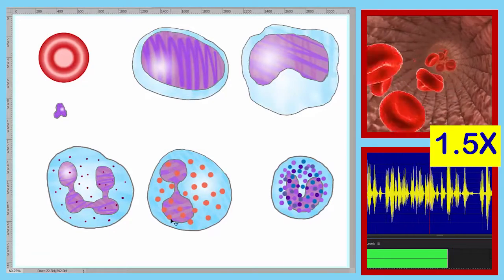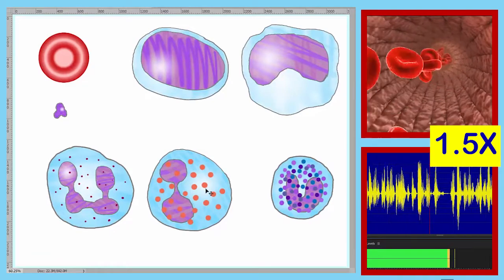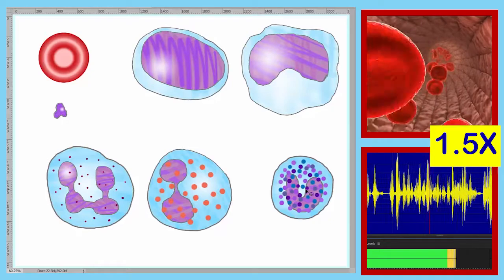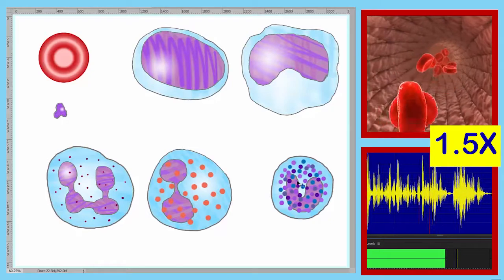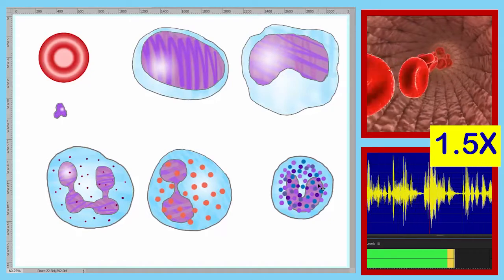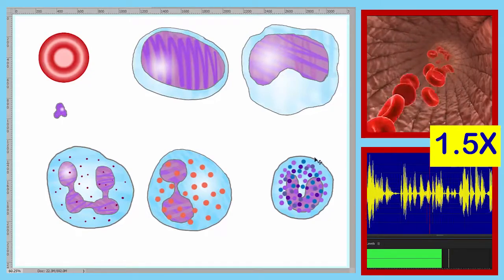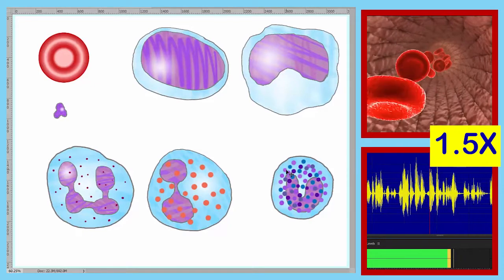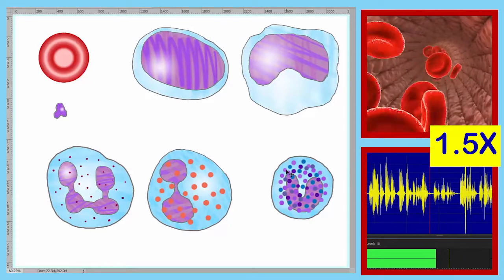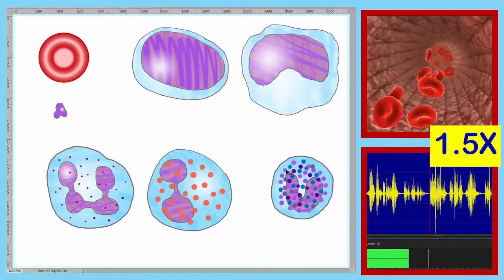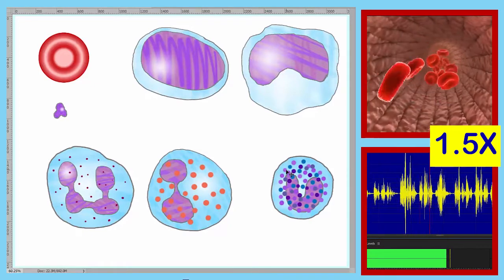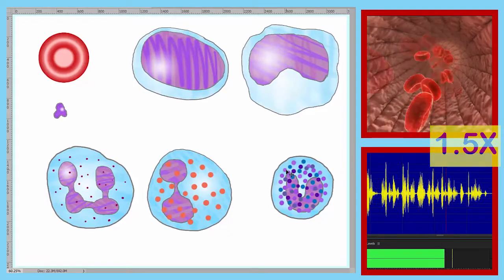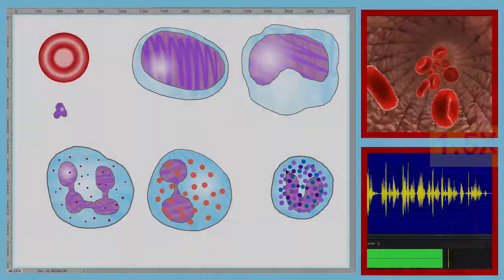The last three formed elements all have granules. The fifth has a multi-lobed nucleus with small reddish granules — the nucleus can have three to five lobes. The sixth has a bi-lobed nucleus with orange-colored granules. The seventh is a little smaller than the previous two, with so many large granules that they obscure the U- to S-shaped nucleus. In the next lecture we will annotate this slide. That concludes this lecture on the structure of the formed elements.